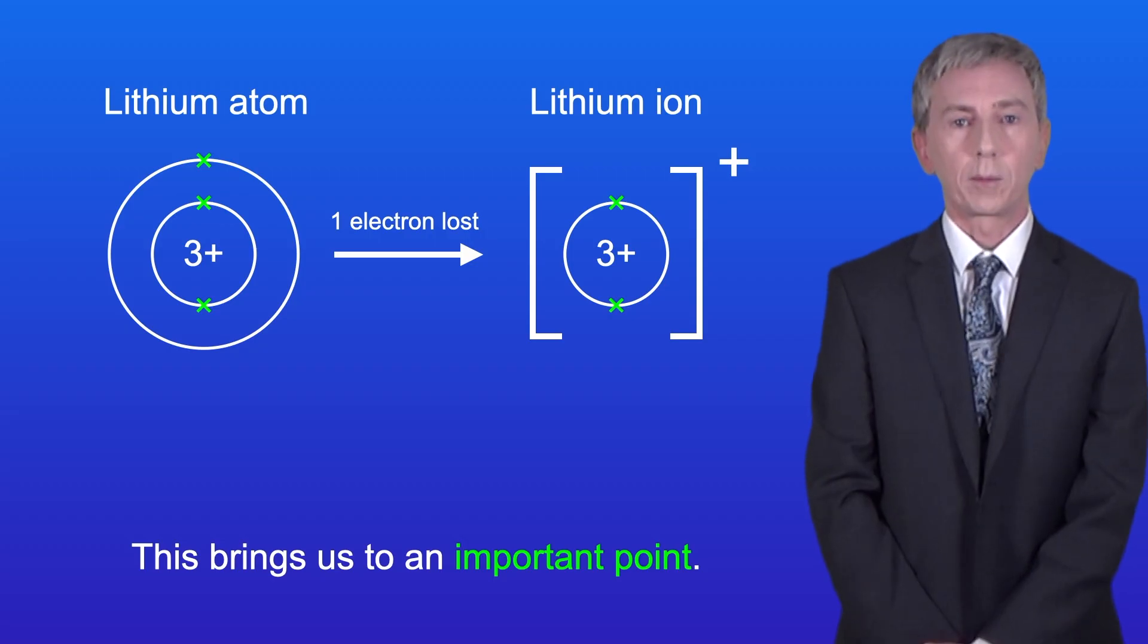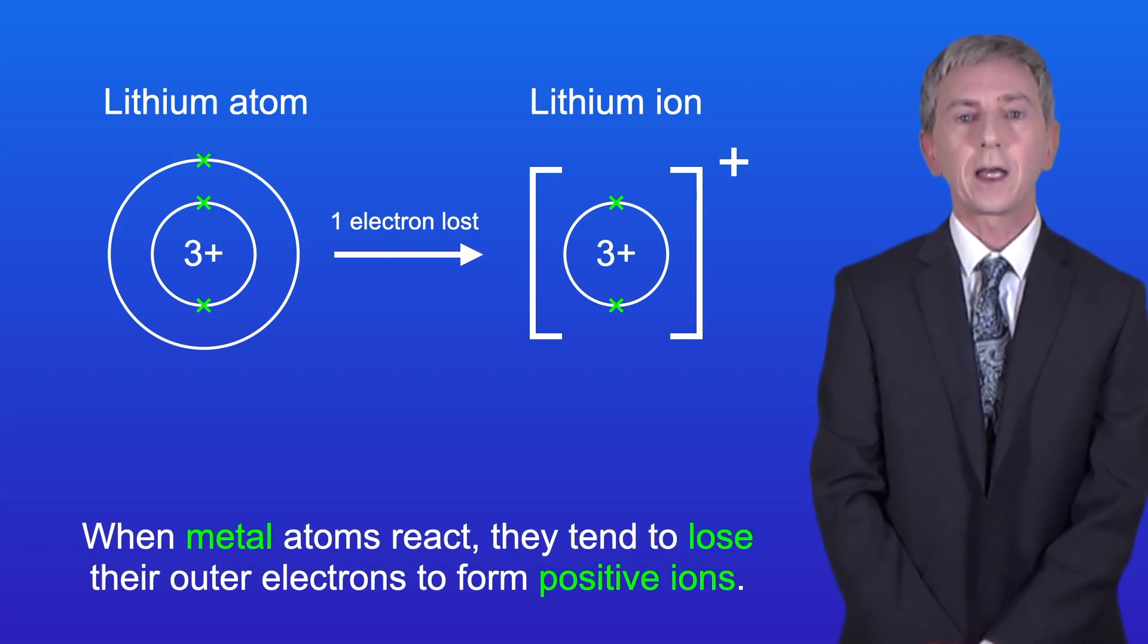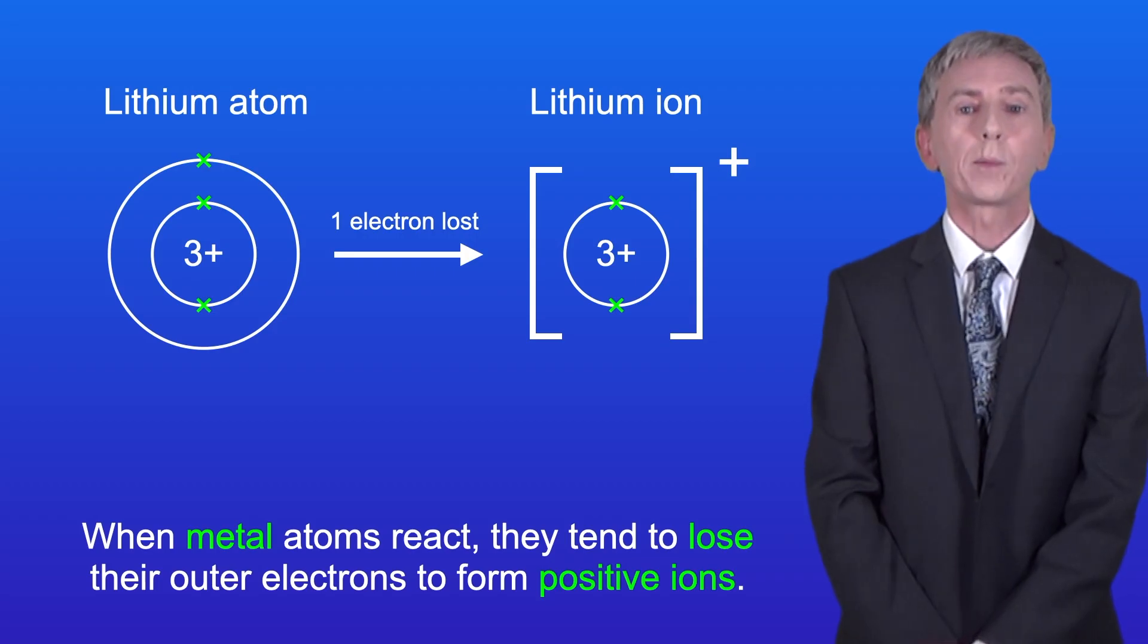Now this brings us to an important point. When metal atoms react they tend to lose their outer electrons to form positive ions.